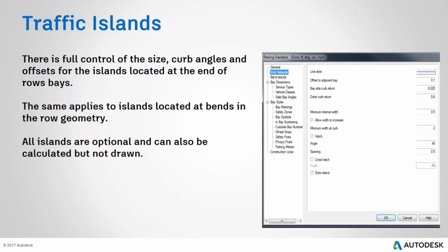Regarding construction lines: all construction lines by default won't be plotted if you use paper space — only the actual bay markings, symbols, and furniture will appear in paper space. There is a setting in vehicle tracking to switch on construction lines if you need to see them in paper space. The line-by-layer and line-style-by-layer feature isn't in the product yet, but it is on the wish list.